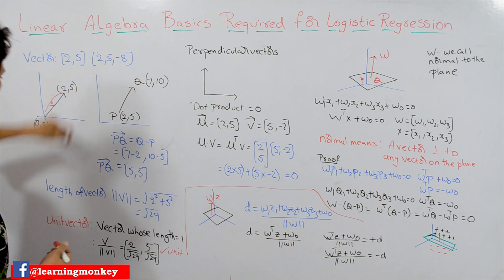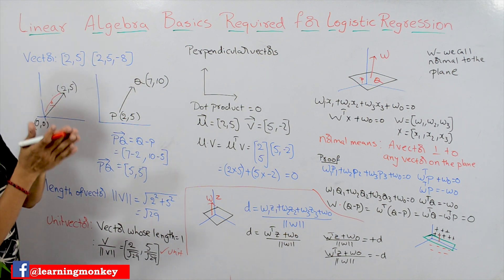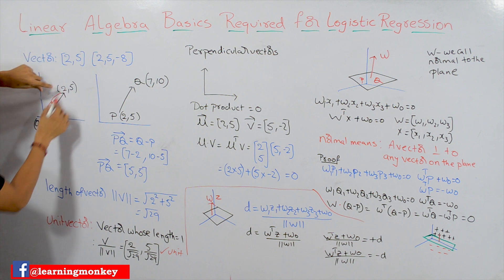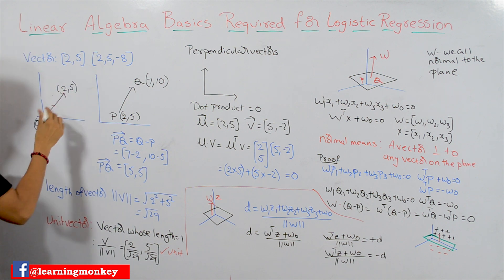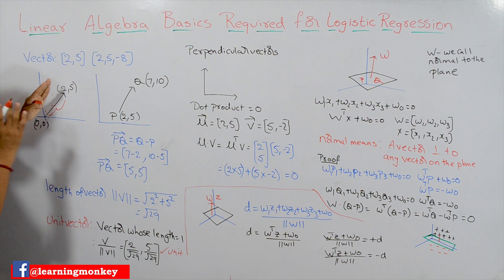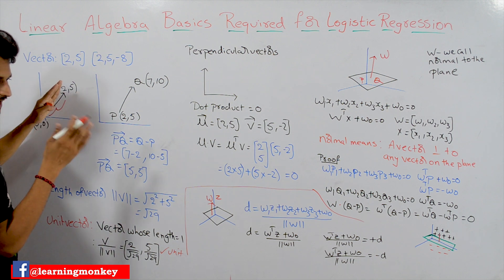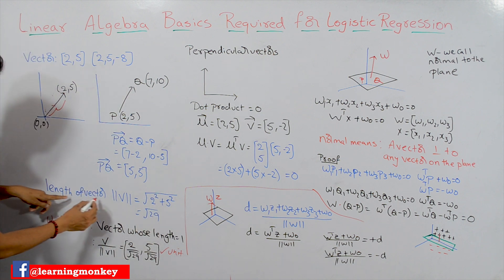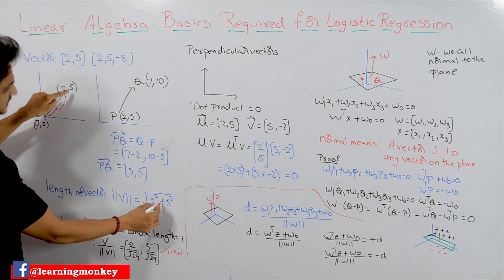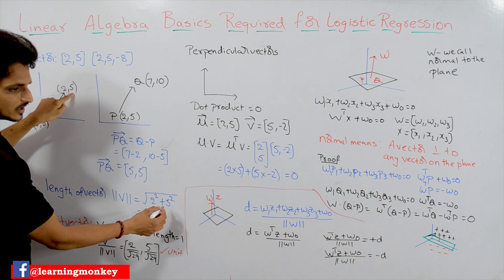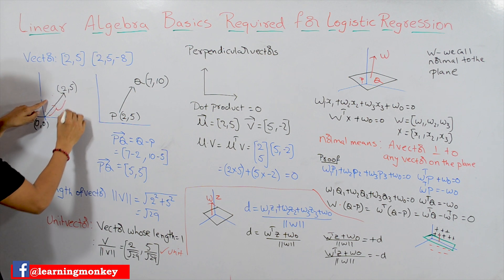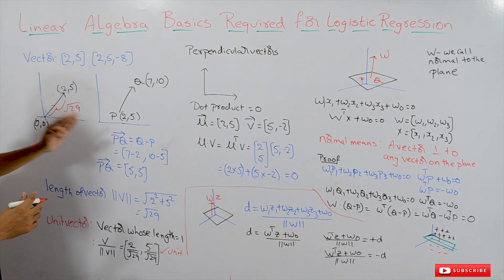A vector has both magnitude and direction. Magnitude means length. Let's take vector (2,5) — it has some length and moves in a certain direction. How do we calculate the length of a vector? The magnitude is calculated as the square root of 2² + 5², which equals the square root of 29. So the length of this vector is √29.